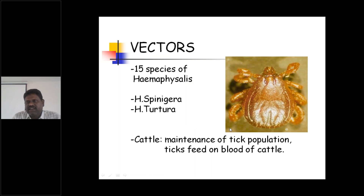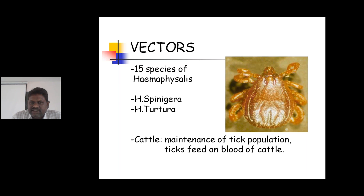The main vector which carries this virus is 15 species of Haemophysalis ticks. These Haemophysalis species act as the main vectors for this disease. For maintaining the tick population, ticks feed on the blood of cattle. The tick feeds on cattle blood which contains this virus.